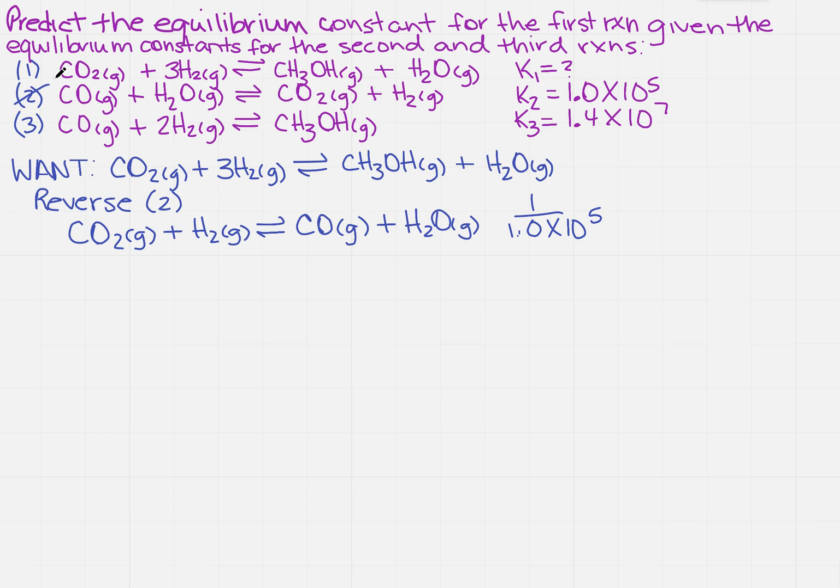I'm looking for 1, so the only equation I have left that I can do anything with is number 3. If you notice, I need to get the H2 on the left and the CH3OH on the right. Well, those are already on the correct side in number 3. So I'm just going to rewrite number 3. I'm going to put number 3 down here. And since I didn't do anything to number 3, I'm just going to rewrite the equilibrium constant.